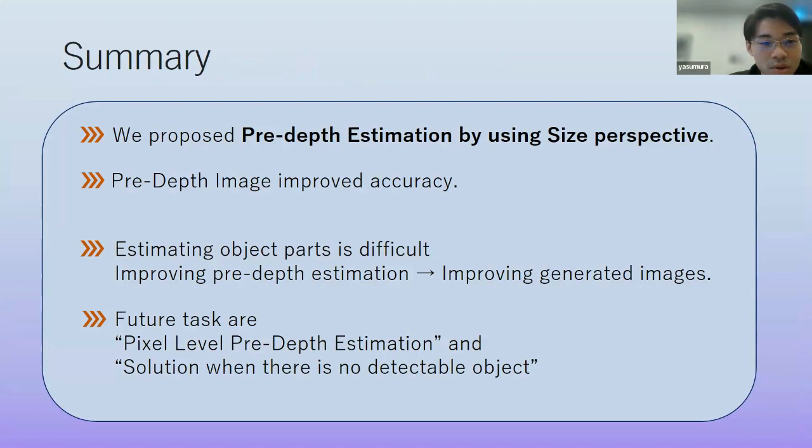So that is the final summary part. We propose the pre-depth estimation by using size perspective. Pre-depth image improve the model accuracy. And from the experimental result, estimating object part is still difficult. And improving pre-depth estimation means improving generated images. And our future tasks are pixel-level pre-depth estimation and solution when there is no detectable object. So we've finished my presentation. So thank you for listening.